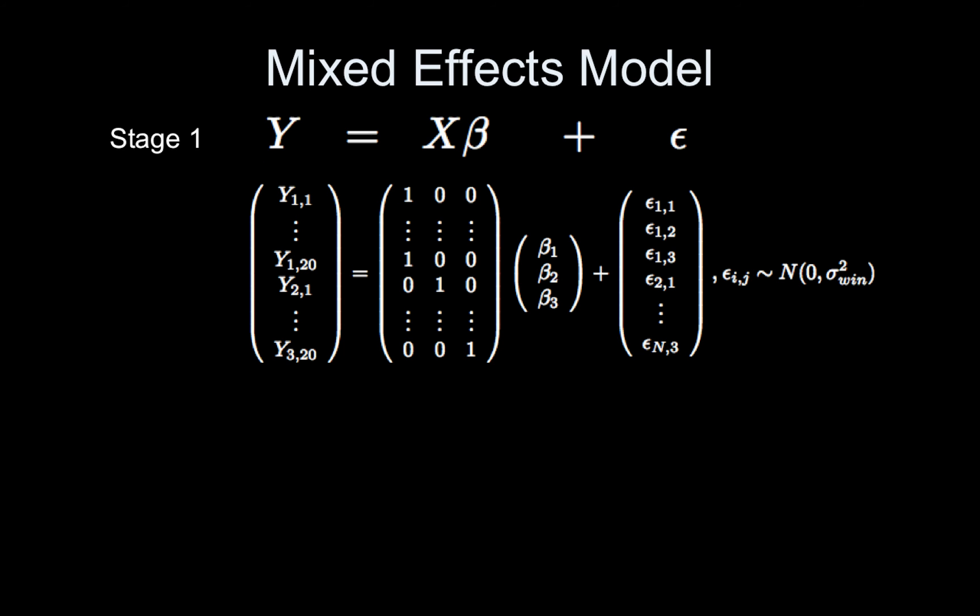So here is the mixed effects model. It has two stages. In the first stage, you can see the model is a one-way ANOVA with three levels. I'm using a cell means approach, so I have an indicator for each female. Beta 1 is the mean hair length for female 1, beta 2 is the mean hair length for female 2, and beta 3 is the mean hair length for the third female.